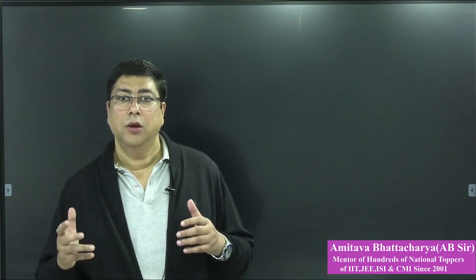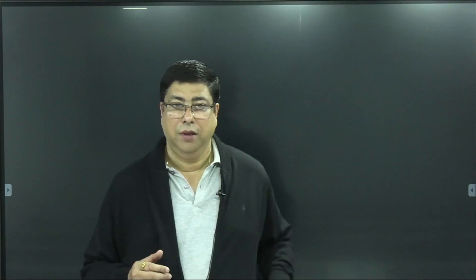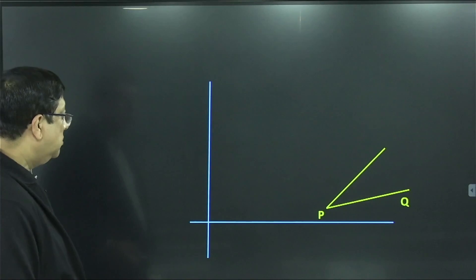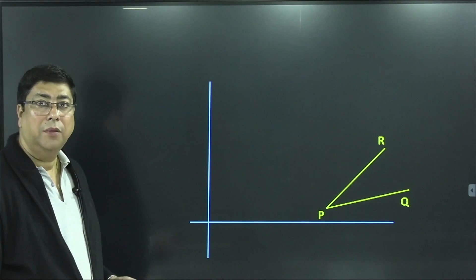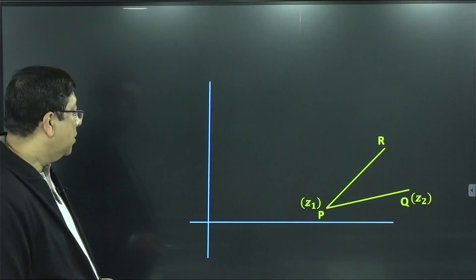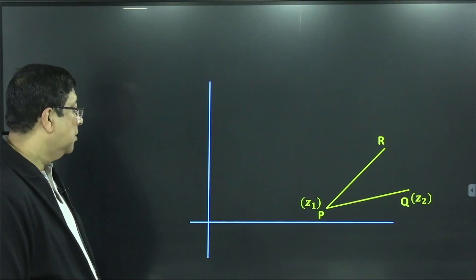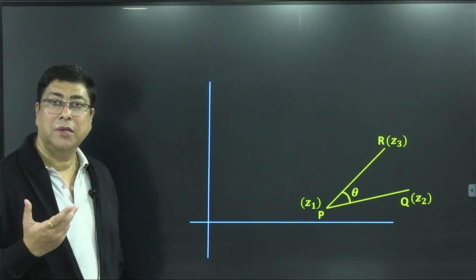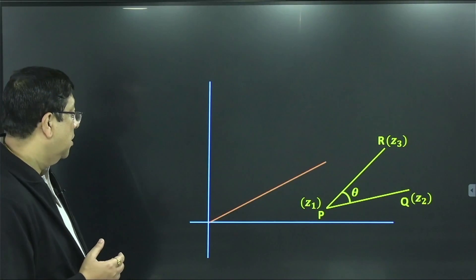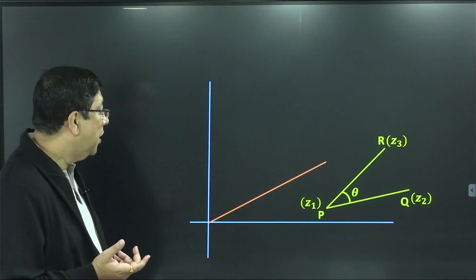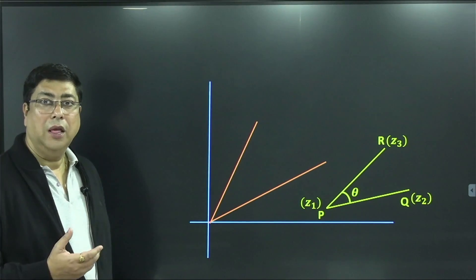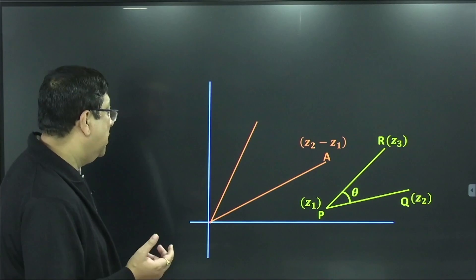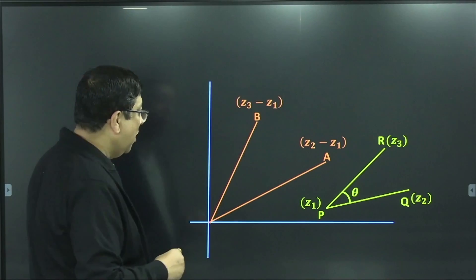Hello students, today we will discuss the angle between two straight lines in the complex plane. Let us consider an argand plane with two straight lines — two line segments PQ and PR. PQ joins the complex numbers Z1 and Z2, and PR joins the complex numbers Z1 and Z3, with angle theta between them. Now let us shift the line segments PQ and PR to the origin, keeping the same angle between them. So point A is Z2 minus Z1 and point B is Z3 minus Z1.